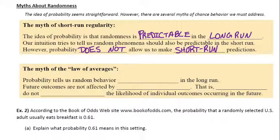You can make predictions in the long run, for example, over 500 trials, like we looked at the coin flip, but not necessarily in the short run, like 10 trials.